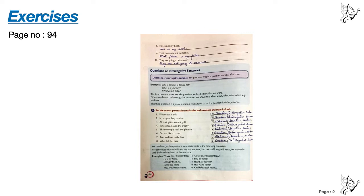Number B: Put the correct punctuation mark after each sentence and state its kind. Eight questions are given. You have to identify what kind of sentence it is, and then in the square box you have to put the punctuation sign — full stop, question mark, exclamatory mark, comma. Read the sentence, decide what punctuation mark you need, put it in the box, and then write what kind of sentence it is.